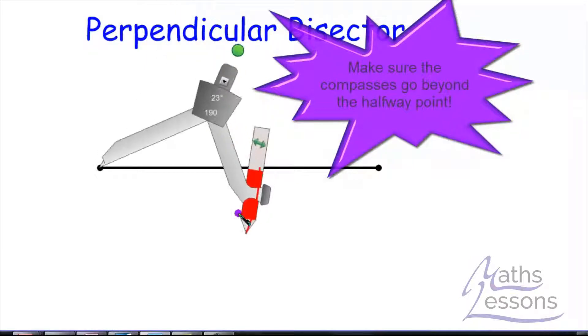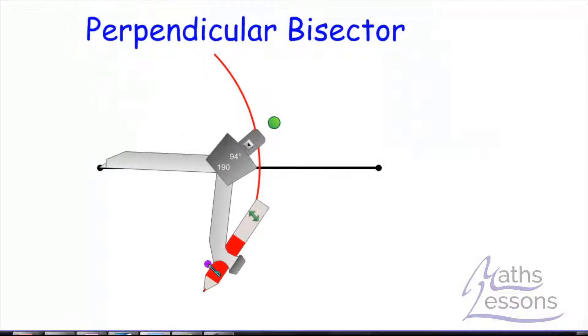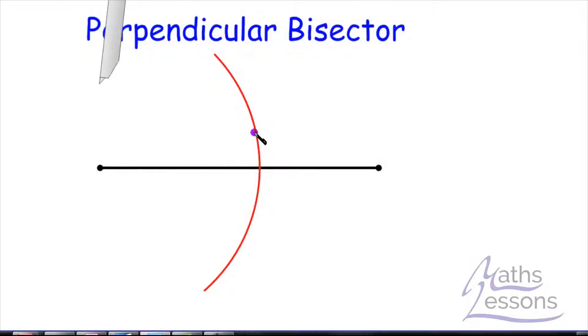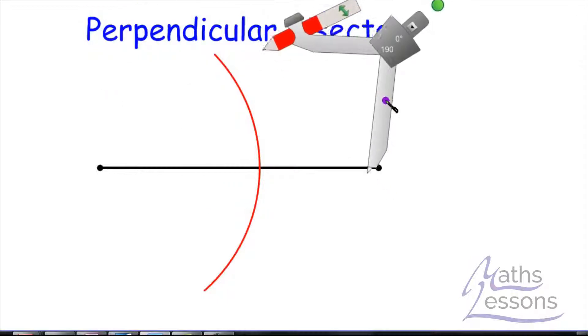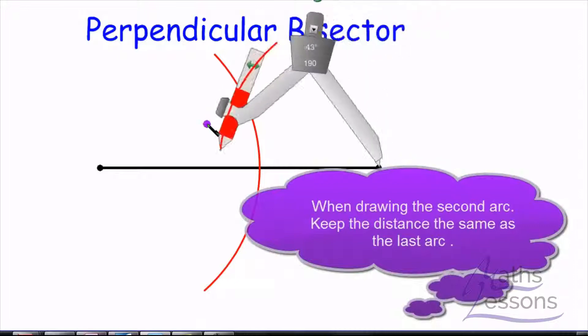Once we've done that we'll draw an arc above and below the line. Next we're going to take that compass, flip it around and put it on this point here, and then we do the same thing, draw an arc.